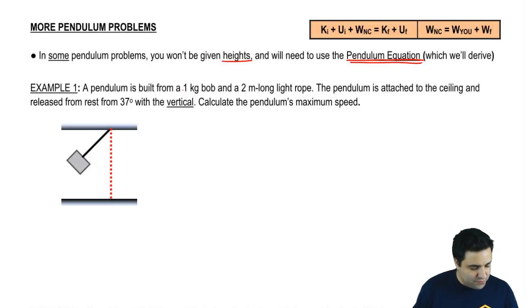A pendulum is built from a one kilogram bob, so this is the mass here, m equals one, that has a length of two meters. That's the length of this rope here, length equals two. The rope is light as always which means the rope is massless. The pendulum is attached to the ceiling and released from rest from 37 degrees with the vertical. That means that this angle over here is 37.